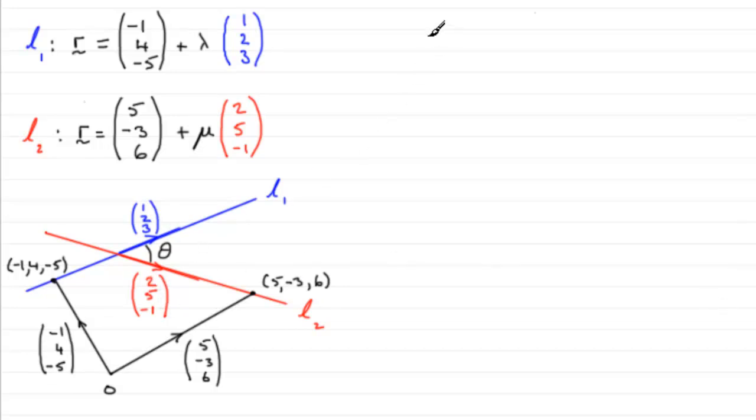Now, in an earlier tutorial, I showed you that if you want to work out an angle between two vectors, we use the scalar or dot product. And that was that cos theta equaled a dot b divided by the magnitude of these two vectors, the magnitude of vector a and the magnitude of vector b.